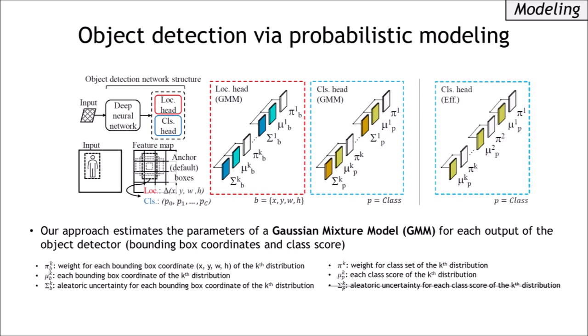We also propose a method to reduce the computational cost of the classification head by removing the variance parameter. Please refer to our paper for more details on this.